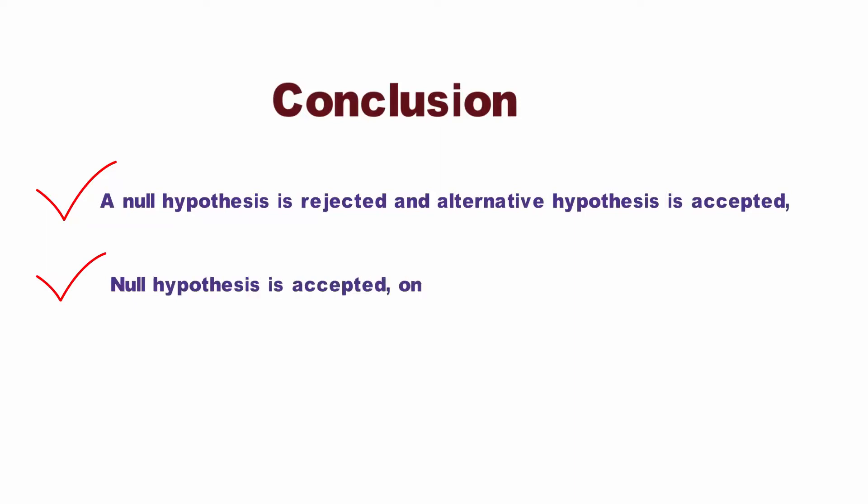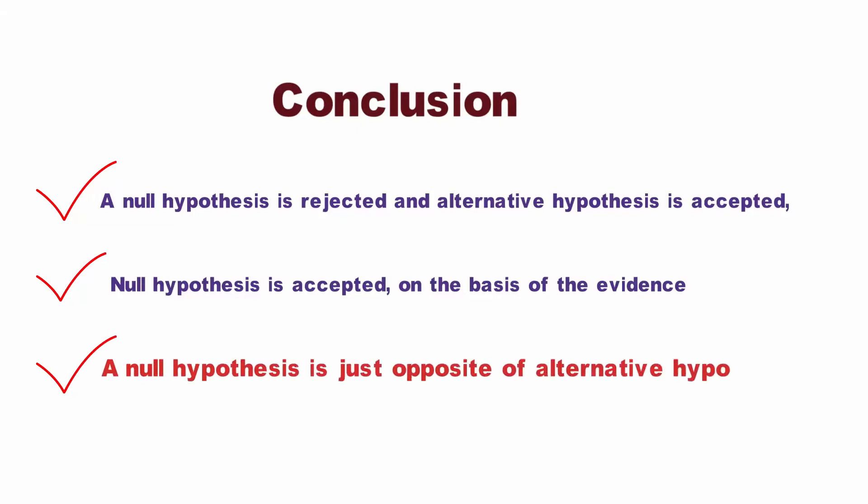There are two outcomes of a statistical test. First, a null hypothesis is rejected and alternative hypothesis is accepted. Second, null hypothesis is accepted on the basis of the evidence. In simple terms, a null hypothesis is just opposite of alternative hypothesis.